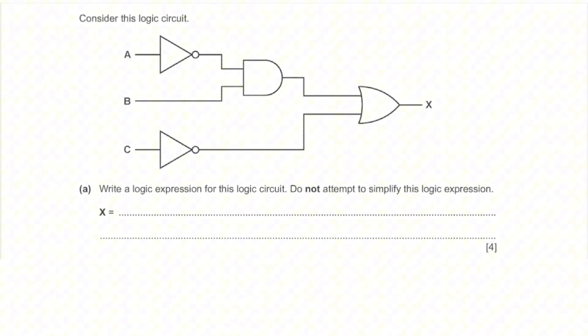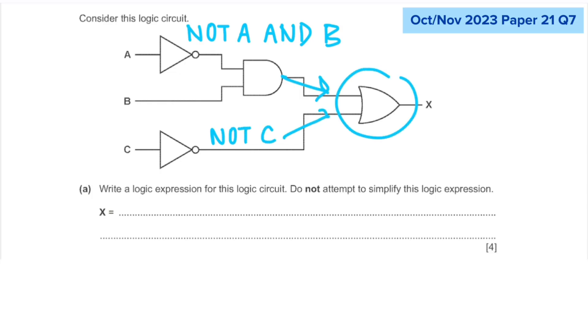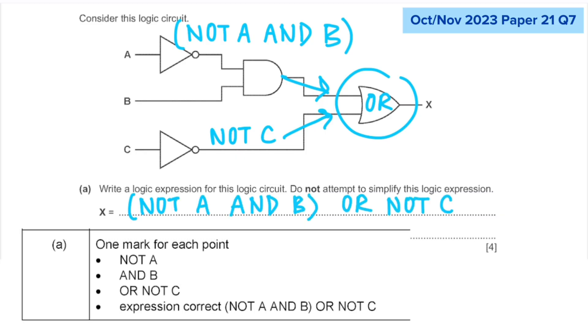I got this other question from October-November 2023. So again, we have to work from the left to the right. Here, we have a NOT gate taking A as the input. So we have NOT A. Next, there's an AND gate that takes NOT A and B as inputs. So this is NOT A AND B. And down here, we have NOT C. So the final gate is an OR gate that takes these two as inputs. So overall, we have (NOT A AND B) OR NOT C. And here's the mark scheme.